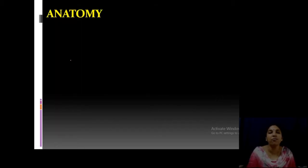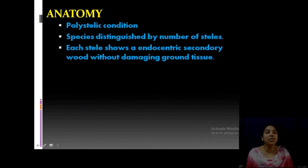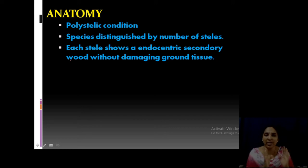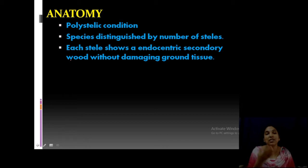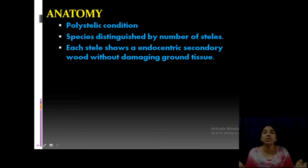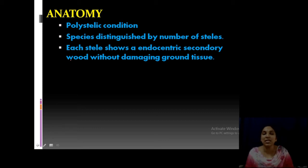Now we have the anatomy of the Medullosa stem. Medullosa stem is polystelic — Medullosaceae members are polystelic, as already discussed. Species are distinguished by number of steles. There are many species of Medullosa; we are discussing Medullosa noei. Each species can be identified by looking at the number of steles.